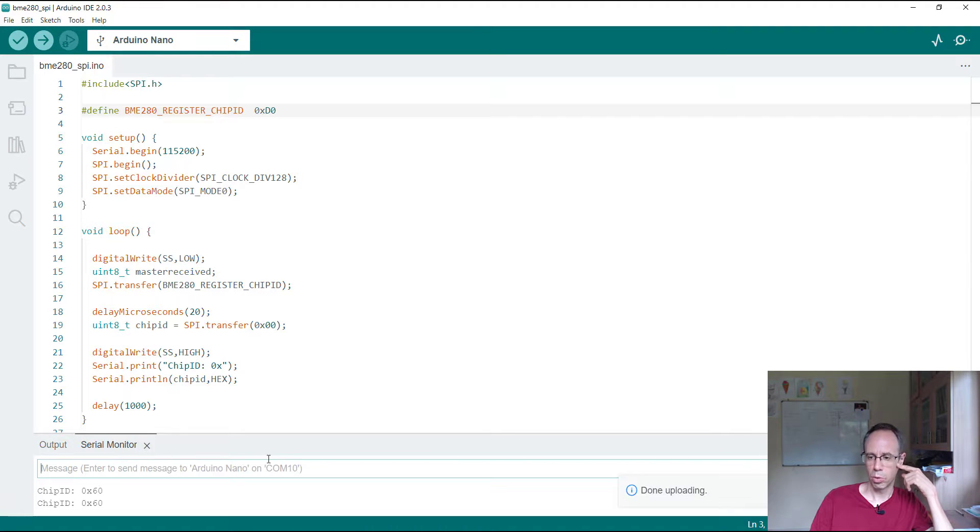We're seeing here when I go to the serial monitor I'm getting the chip ID 60 which is for the BME 280. BME 680 for example gives us the 61.